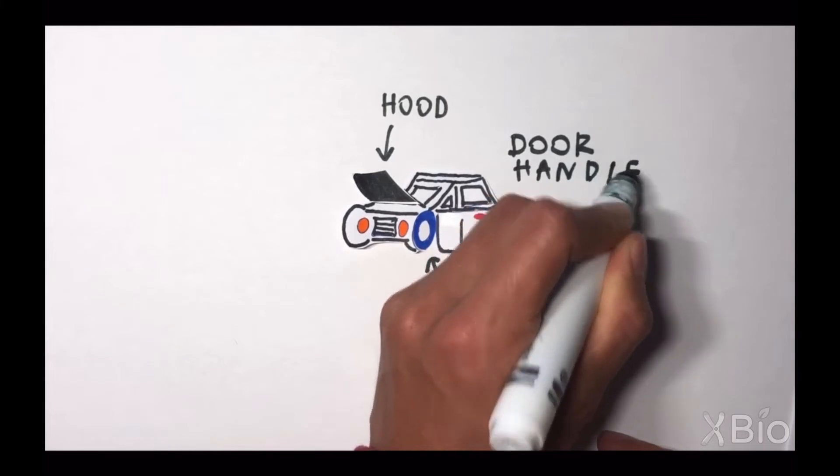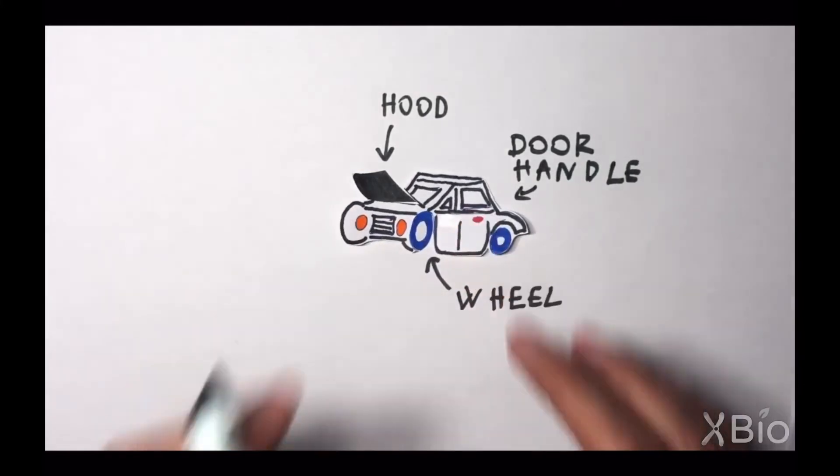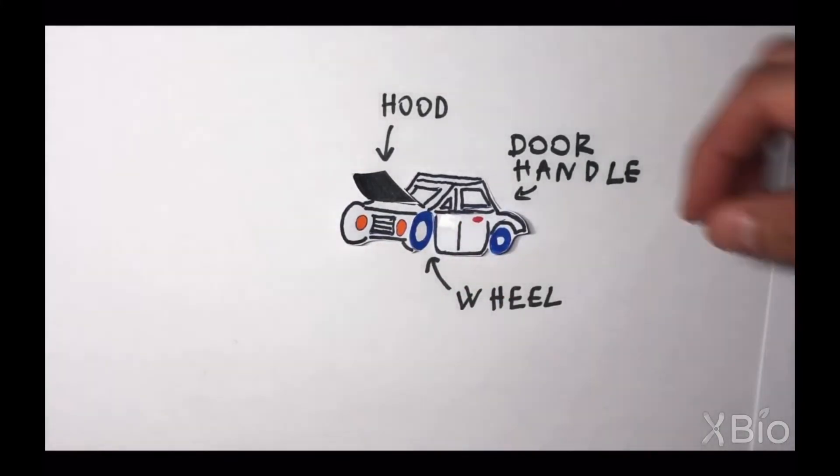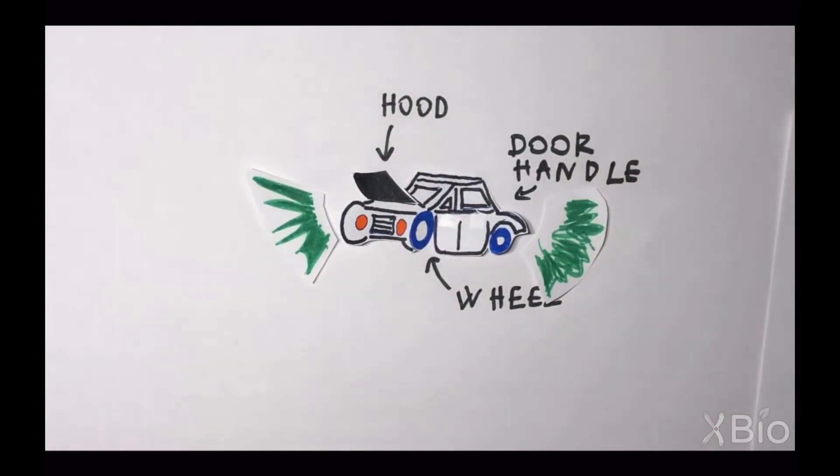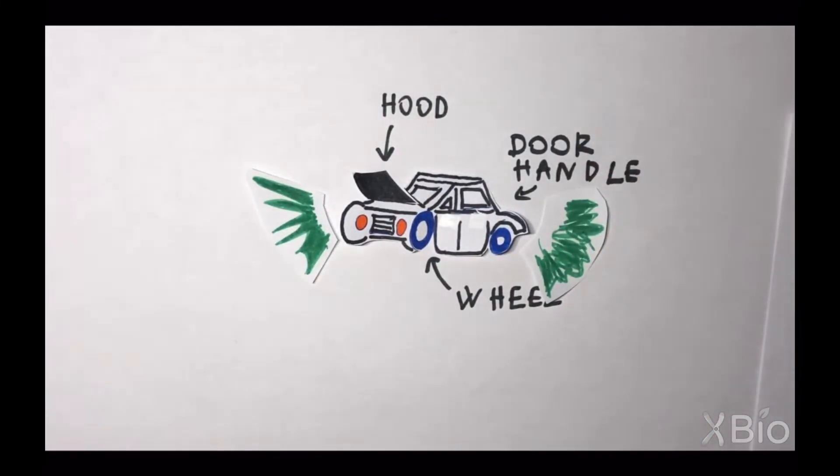Finally, you remove the door handle, and the car still functions just fine without the door handle, so you know that it is not critical for driving the car. Each time you remove something, you get a clue about what it might do.